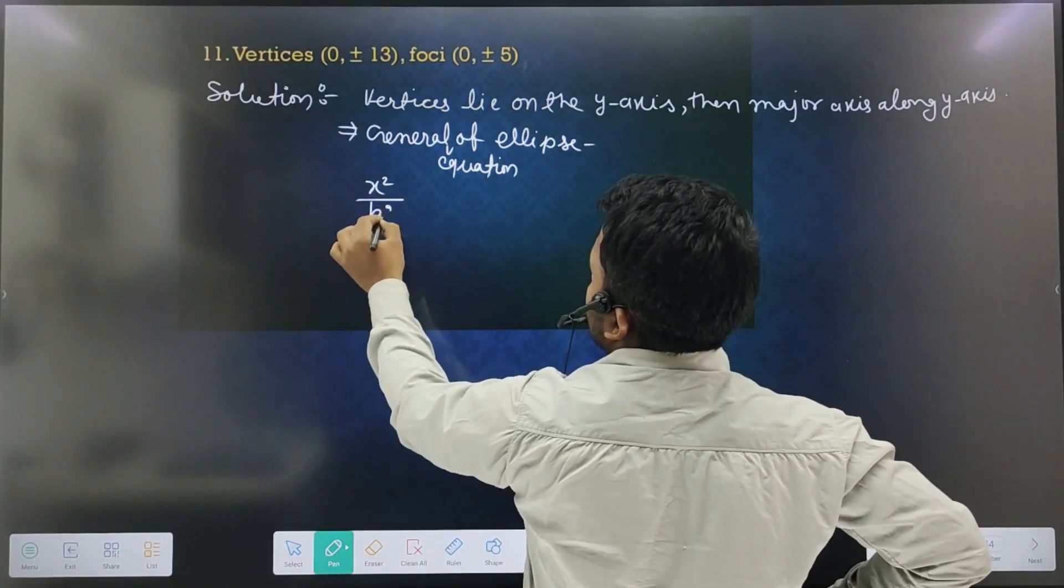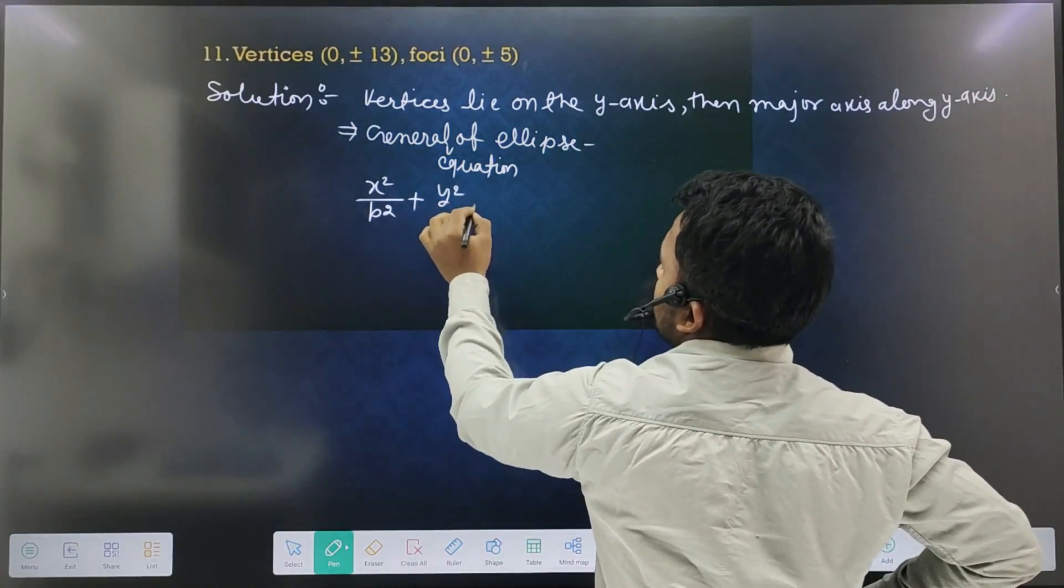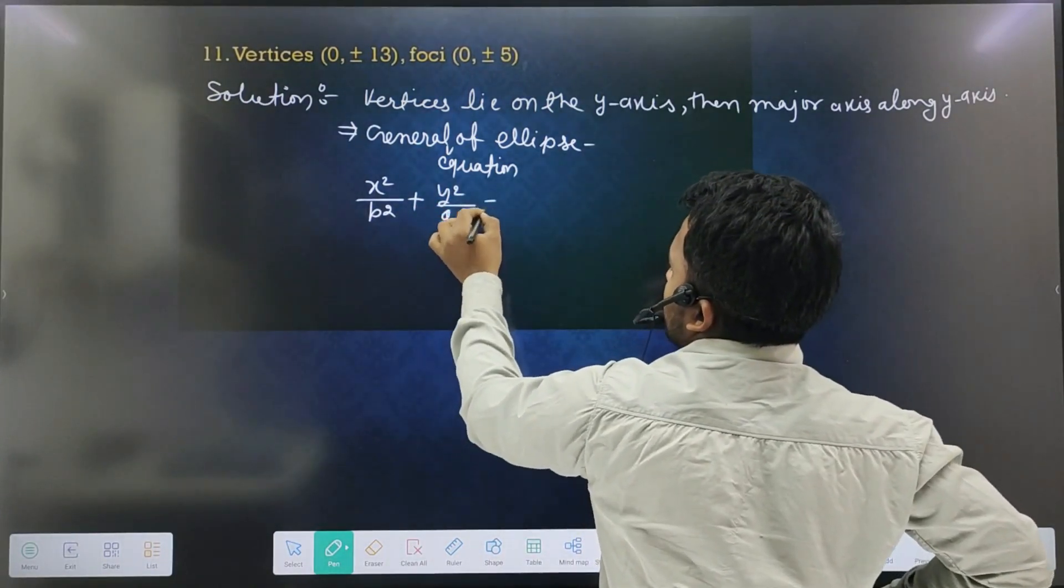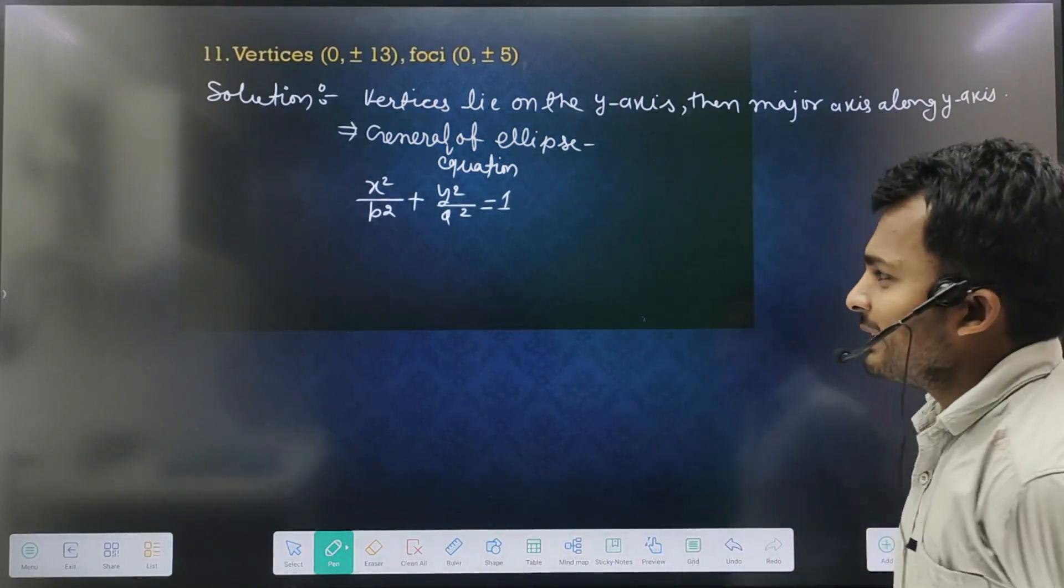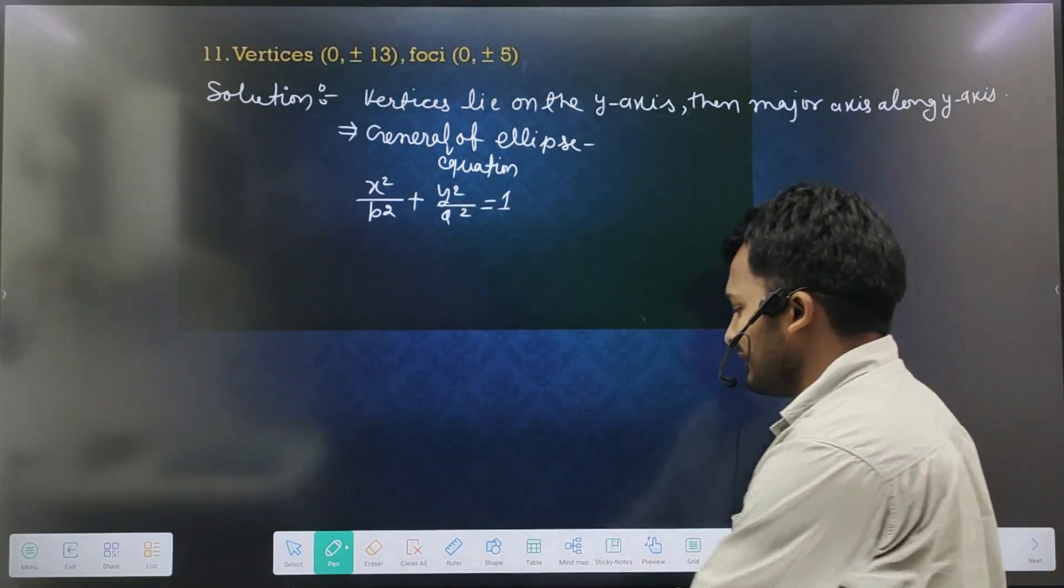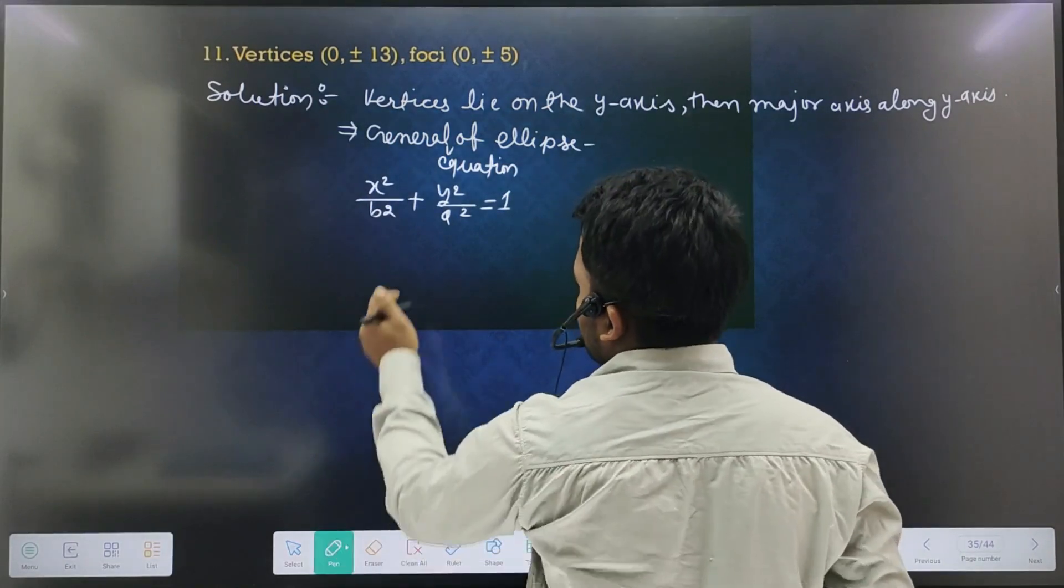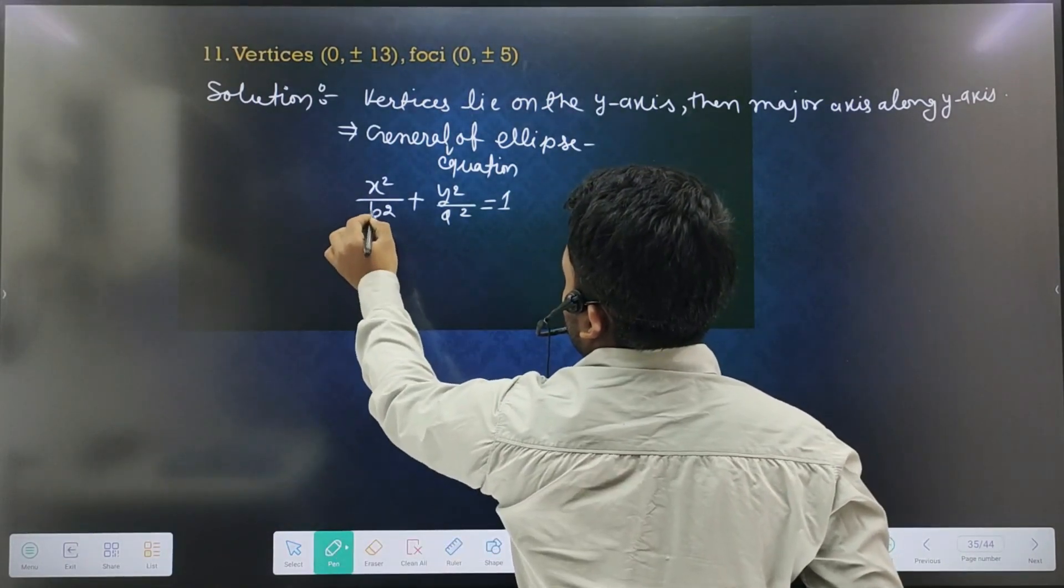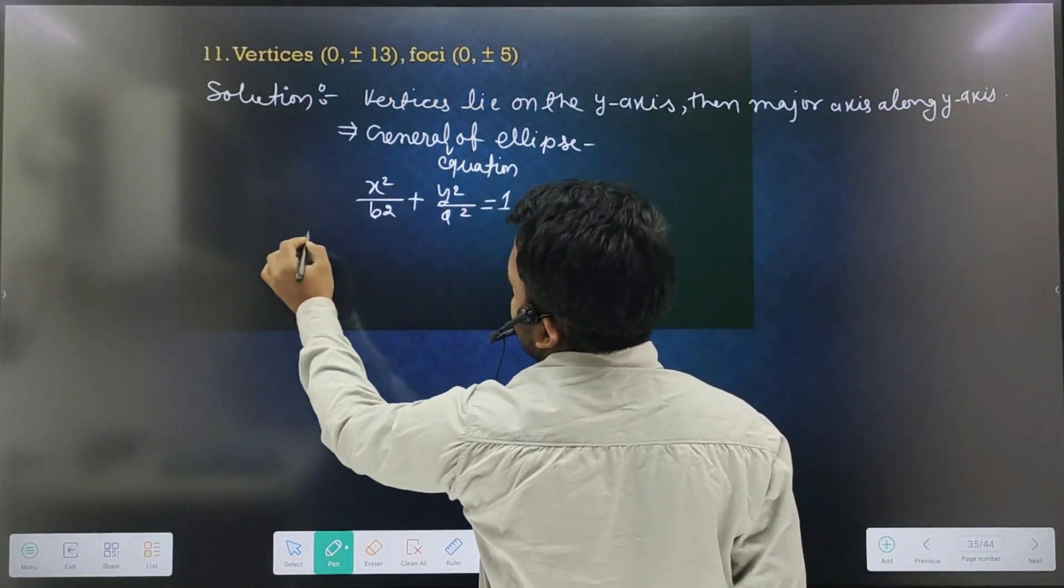Here b will come because now who is the government? Who is the government now? Y is the government. Do you understand? Now y is the government. Now we will make y's government.